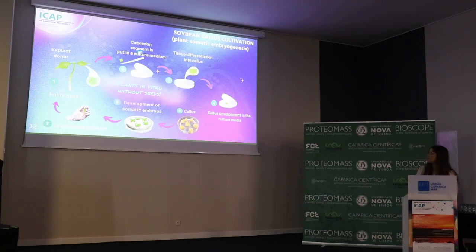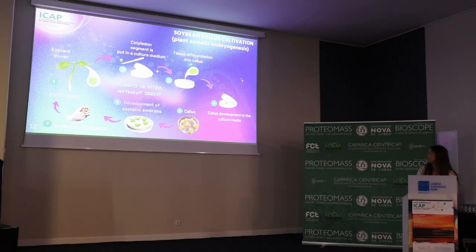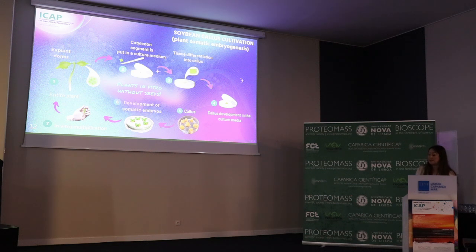Here I have the steps involved in this process. We have the explant donor, an entire plant. We take a segment — for example, the cotyledon — and put it in the culture medium. Then tissue differentiation starts into a cluster of cells, the callus. If we continue this process, we have the mature callus, and then we start to grow soybean plants from the callus through in vitro multiplication, producing entire plants equal to the original donor.